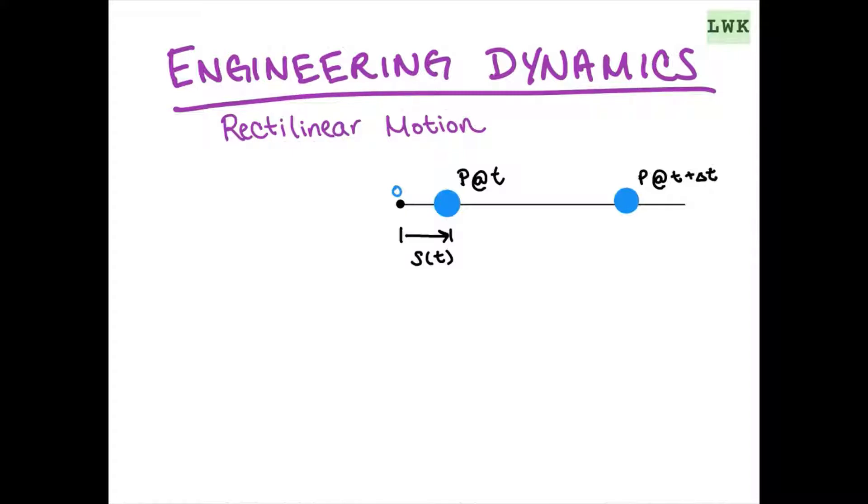We're going to start defining some of our terms here. We're going to measure position as a scalar s, which is going to be a function of time. So we're going to write that as s(t).